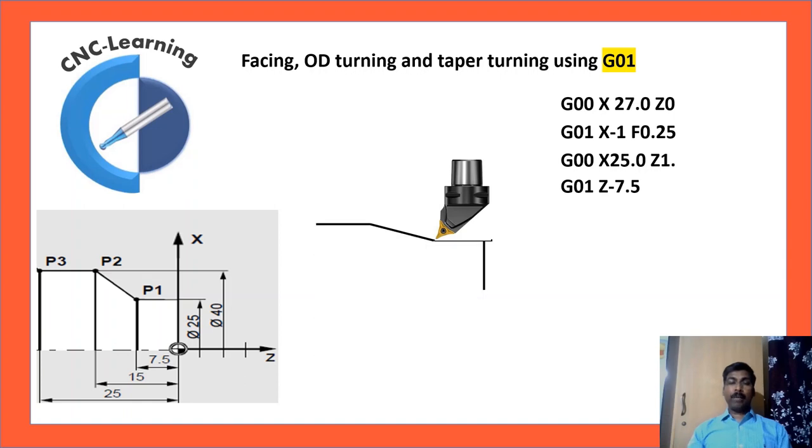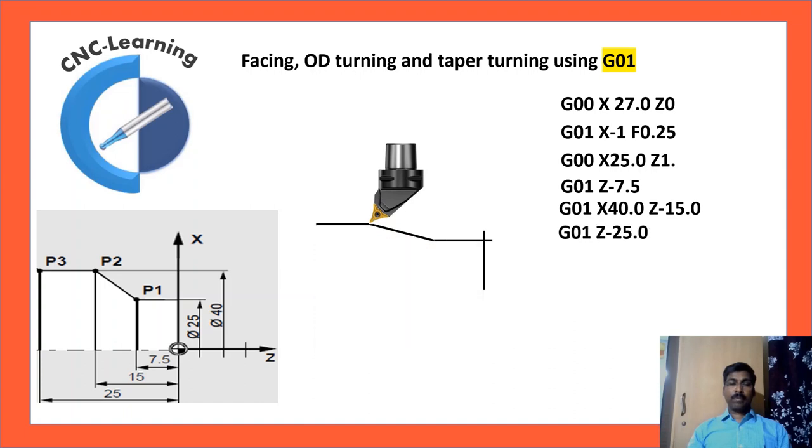And for doing a taper, you need to define both X and Z. G01, X40, Z minus 15. Next is a plane turning again, G01, Z minus 25.